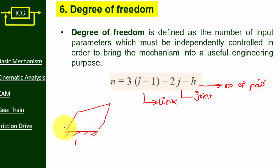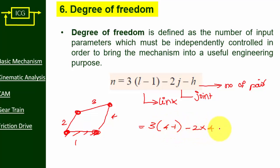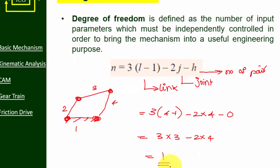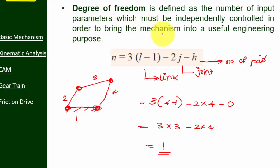For the four-bar mechanism: it has four links and four joints. So n = 3(4 − 1) − 2(4) − 0 = 3(3) − 8 = 9 − 8 = 1. The degree of freedom of the four-bar mechanism is one, representing the crank angle theta. Knowing the crank angle allows you to find all parameters of the four-bar mechanism — that is the meaning of degree of freedom.